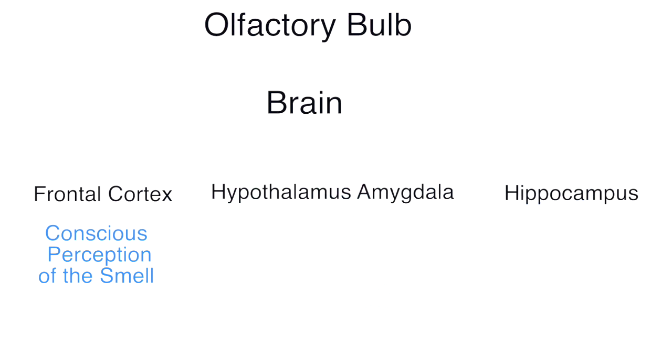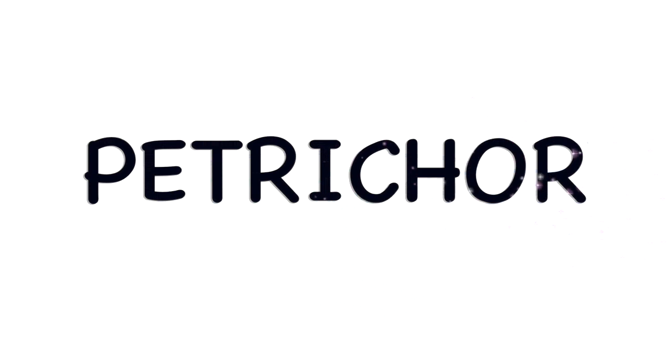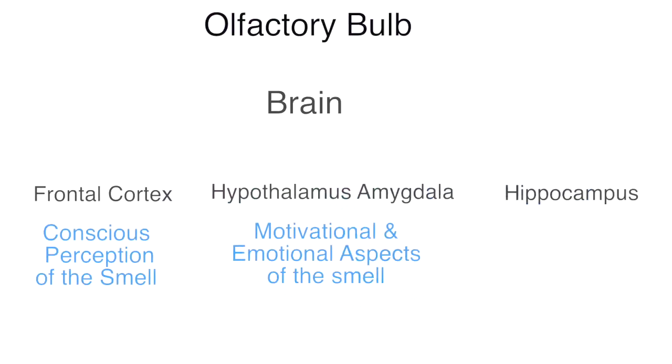The hypothalamus part is for motivational and emotional aspects of the smell. Like when the first drops of rain hit the earth, the aroma—what we call petrichor, the earthy smell—is scattered all over and we feel relaxed and joyful with that smell because we associate emotions with that.